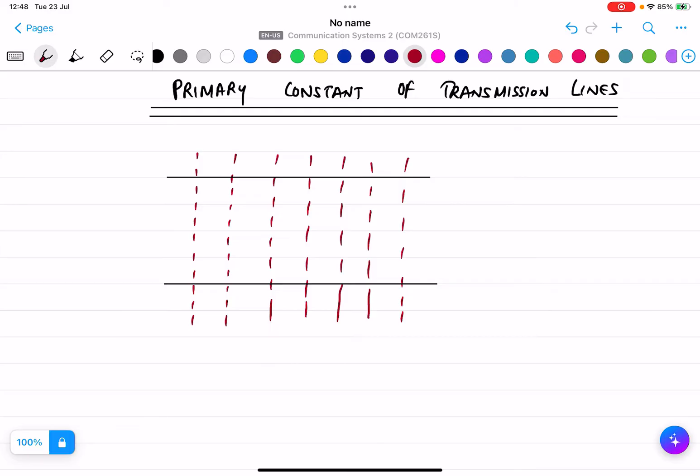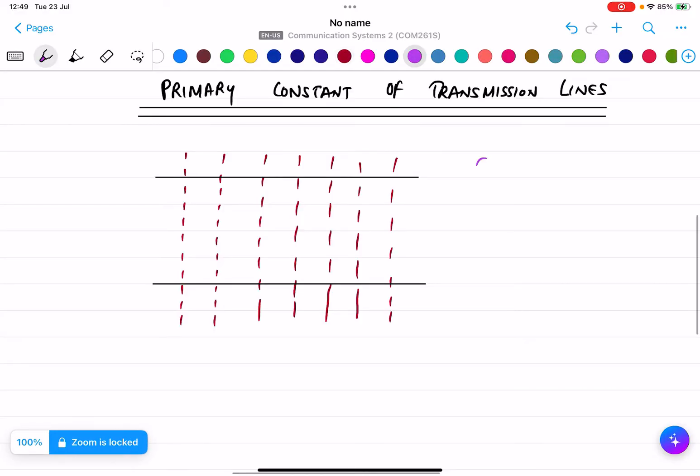To find the primary constants, we need to neglect the transit effect. To neglect the transit effect, we need to consider a small piece of wire.